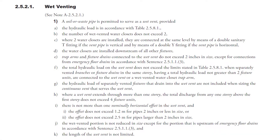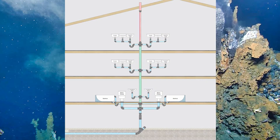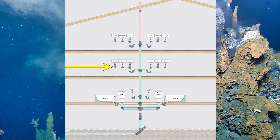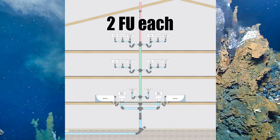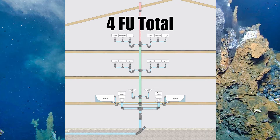Clause 2521 1H: where a wet vent extends through more than one story, the total discharge from any one story above the first story does not exceed four fixture units. So these two bathroom groups would not be affected by this clause, but anything on the floors above this point would be. On this story I have two three-compartment laundry trays draining into the soil away stack that's being sized as a wet vent. Both of those laundry trays are two fixture units apiece, making four fixture units total for that story — that is the maximum allowed according to this clause.